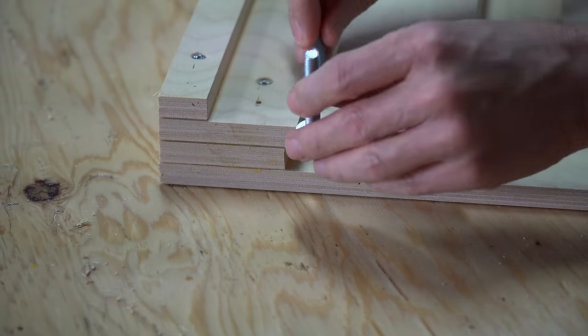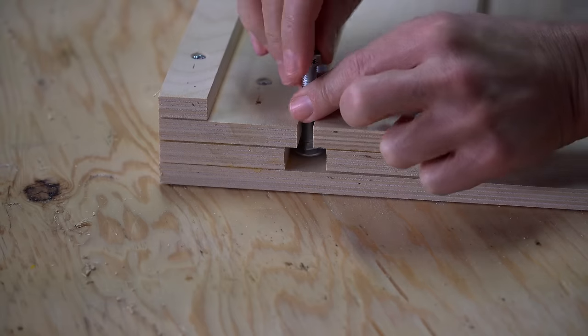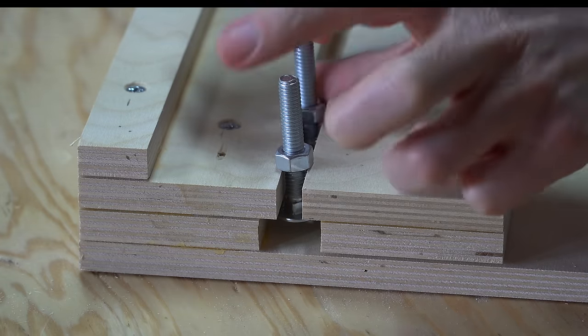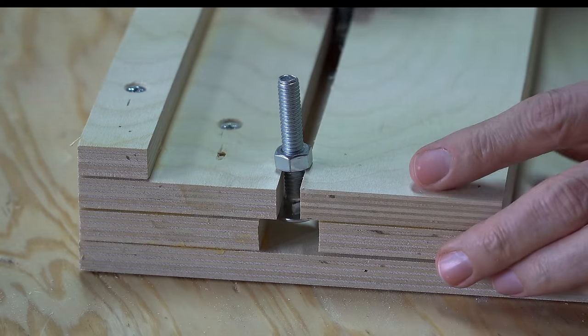As you can see here, there are two sub-assemblies that go around each side of this carriage bolt. To make each of the sub-assemblies, all I had to do was line up the edges.